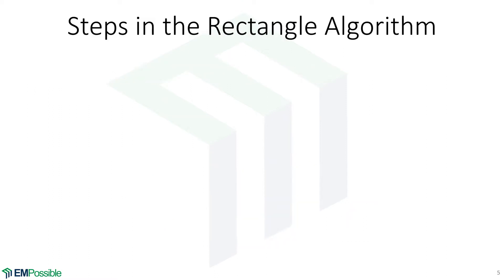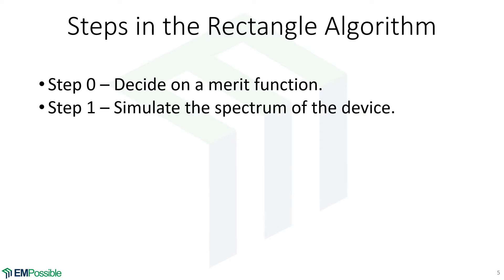Here's the steps that we have developed for our rectangle algorithm. The first thing is to decide on a merit function, and our merit function was the rectangle. And we want bandwidth times reflectance or performance times bandwidth. So when we enter the optimization, we'll have a device design. We will simulate it, and we will calculate its reflectance as a function of frequency. We've been showing that as the blue line.